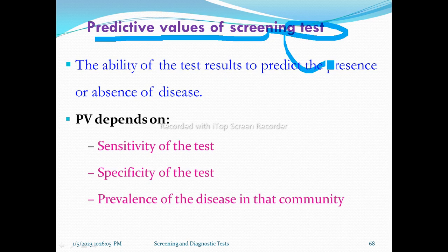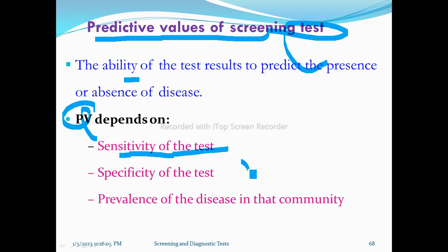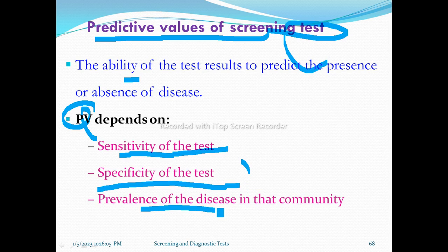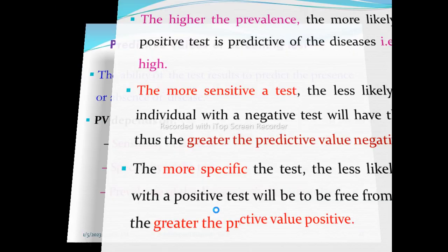The predictive values of a screening test depend on the sensitivity of the test, the specificity of the test, and the prevalence of the disease in that community.